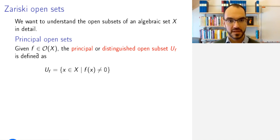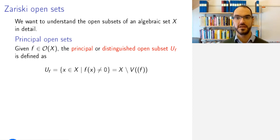Given an algebraic set X and a function F in its coordinate ring, the principal open subset, also called the distinguished open subset U_F, is defined as the set of all points where this function F does not vanish. So it's the complement of the vanishing set of F.